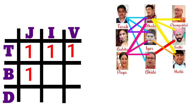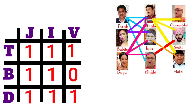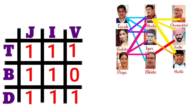Babita and Iyer have a friendship, so we put 1. Babita and Vire have no friendship, so we put 0. Daya has a friendship with Jethalal — put 1. Daya has a friendship with Iyer — put 1. Daya has a friendship with Vire — put 1. Thus we have a 3×3 matrix completed.